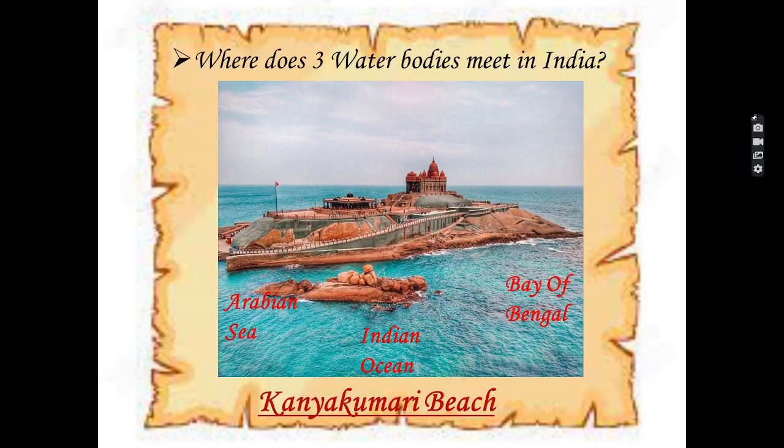Can you tell me where do three water bodies meet in India? Kanyakumari Beach. Very good. There are three water bodies — the Arabian Sea, Indian Ocean, and Bay of Bengal — that meet at Kanyakumari Beach.